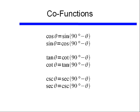That is, sine of θ equals cosine of (90° − θ), and likewise cotangent and tangent, and secant and cosecant.